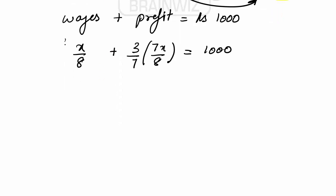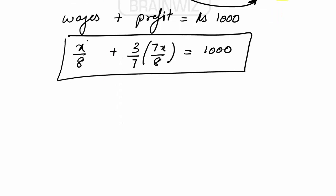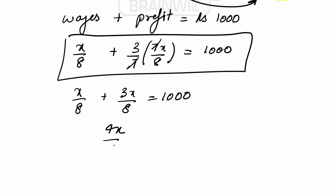Using this equation we can find the value of X, the total profit. X by 8 plus 3X by 8 gives 4X by 8, which equals rupees 1000. This implies X is equal to rupees 2000.